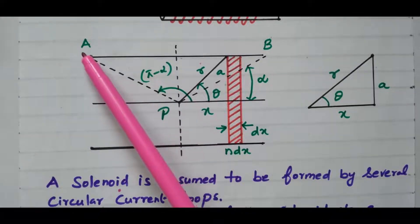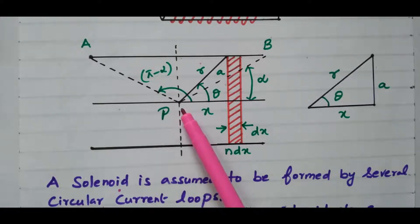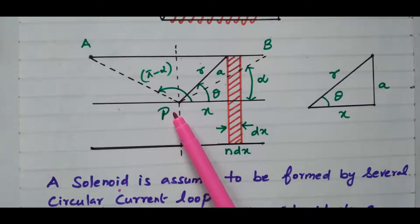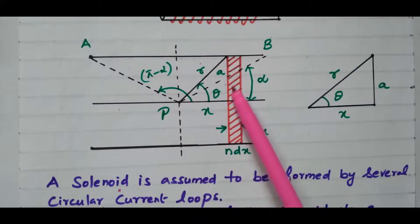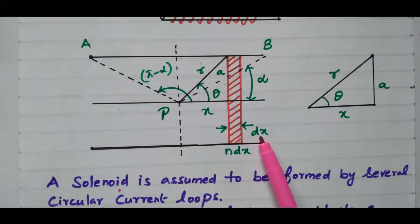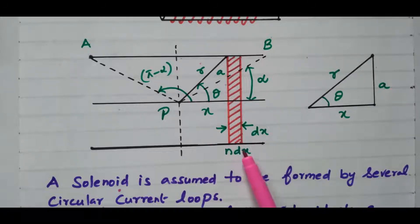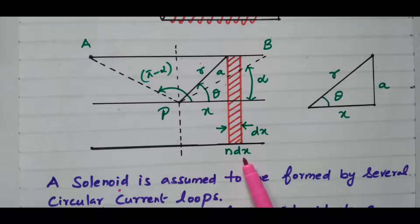The length of the solenoid is AB. Point P is located at the centre. For calculation purposes, we consider one small segment at a distance x metres. The thickness is dx. The number of turns available in that segment is n·dx. By integrating, we will get the total magnetic field.